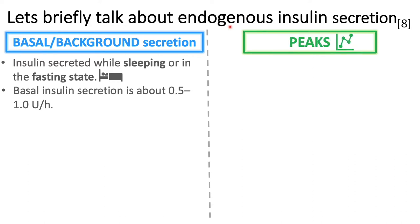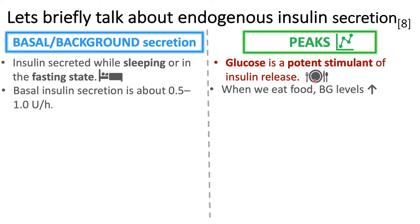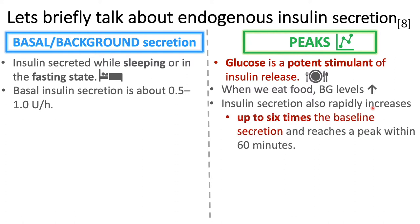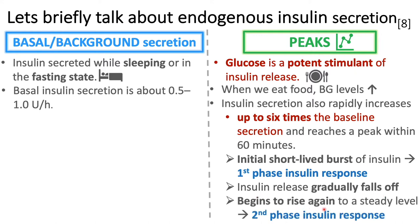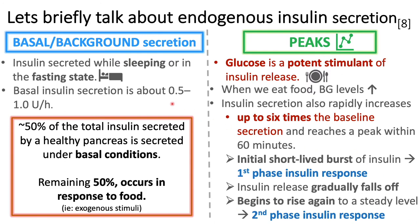When we eat food, blood glucose levels increase, and in turn insulin secretion also increases. Insulin release can be up to six times from baseline and can peak within 60 minutes. This initial short burst of insulin is termed the first phase insulin response. As glucose levels decline, insulin gradually falls off, and then as glucose rises to a steady level again, there is a second phase insulin response. Approximately 50% of total insulin secreted by the pancreas is under basal conditions, and the remaining 50% is in response to food.